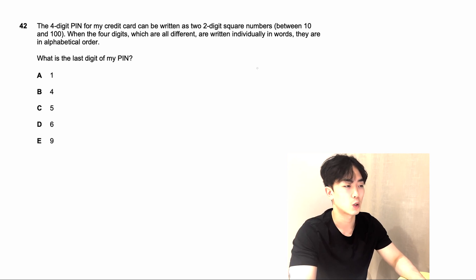First of all, let's work out all the square numbers. So it's between 10 and 100: 16, 25, 36, 49, 64, and 81. These are the possible numbers that we can use.